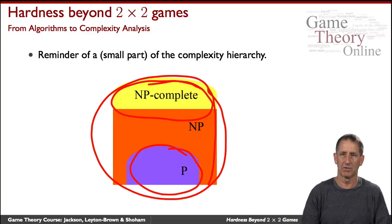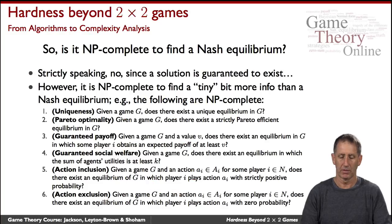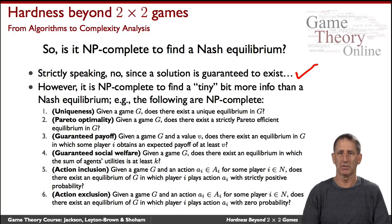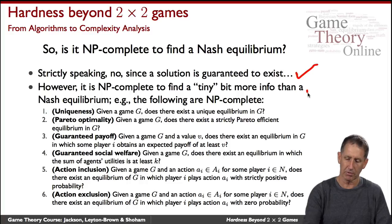This is the general background we need to keep in mind. Now we can ask, where does the problem of finding a Nash equilibrium reside? In P? In NP? What can we say? Well, first of all, strictly speaking we can't quite speak about it being in P or NP because we know from Nash's theorem that a Nash equilibrium always exists. So the question does it exist a Nash equilibrium is trivial. The answer is yes. So we need to look at it a little differently.